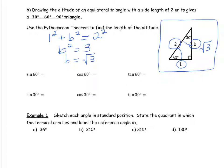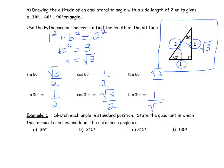Sine of 60 degrees, opposite over hypotenuse, is the square root of 3 over 2. Cosine of 60 degrees, adjacent over hypotenuse, is 1 over 2. Tangent of 60 degrees, opposite over adjacent, is the square root of 3 over 1. For the 30 degree angle: sine of 30 degrees is 1 over 2, cosine of 30 degrees is the square root of 3 over 2, and tangent of 30 degrees is 1 over the square root of 3.